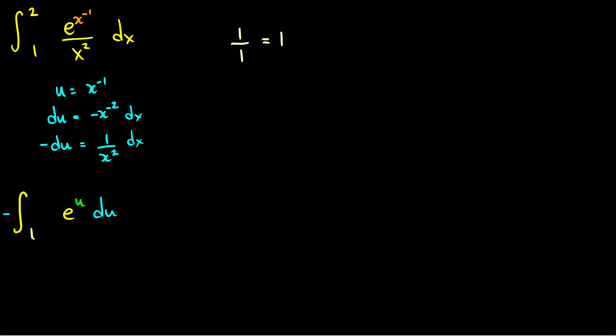But our upper limit, if x is equal to two, then we're going to get one over two as our top limit. So this is now the integral from one to one half. I just plugged one into x to the negative one and then I plugged two into x to the negative one in order to get our new limits of integration.